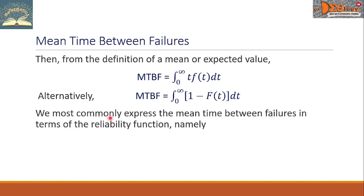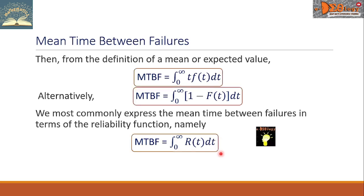We most commonly express the mean time between failures in terms of the reliability function. Namely, this is the formula: MTBF equals the definite integral from 0 to infinity of capital R of T, DT. These are the three formulas for the mean time between failures.